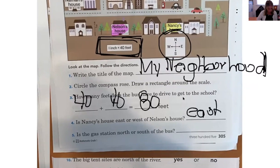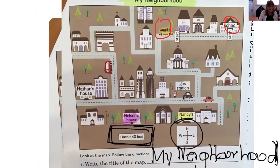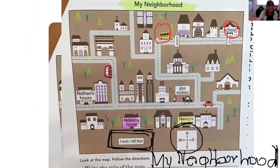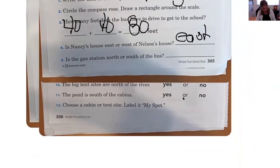Is the gas station north or south of the bus? Let's find the gas station — there it is right here. And do you see where the bus is? I circled the bus in red. So is the gas station north going up, or south going down? That's right — it is south. So you're going to write in "south" right there.